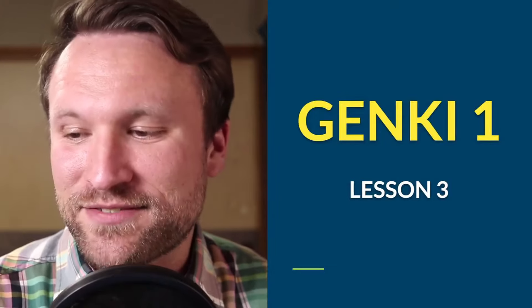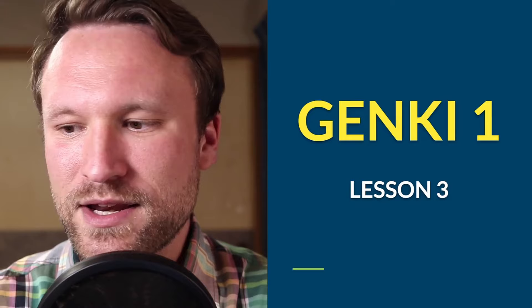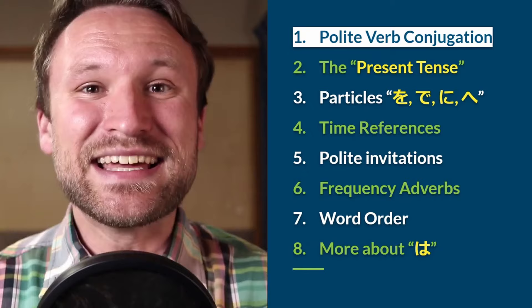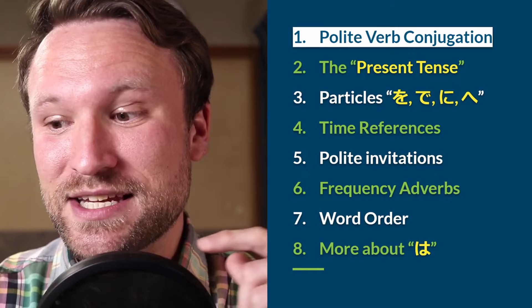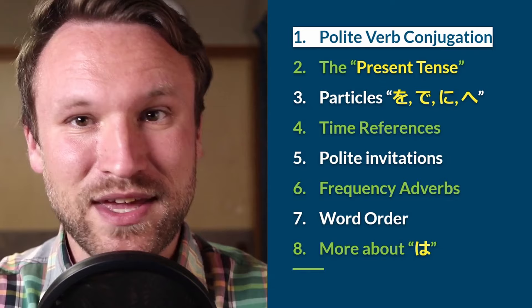Good evening, afternoon, or morning everyone, and welcome to the Toki Niyandi Lesson 3 Genki 1 live stream. I hope you're having a great day. Today we're covering eight sections: the highlighted one in white is polite verb conjugation, which is the main part of this lesson. It's the hardest part in the book, but probably the least complicated in reality — I'm going to show you why it's straightforward today.